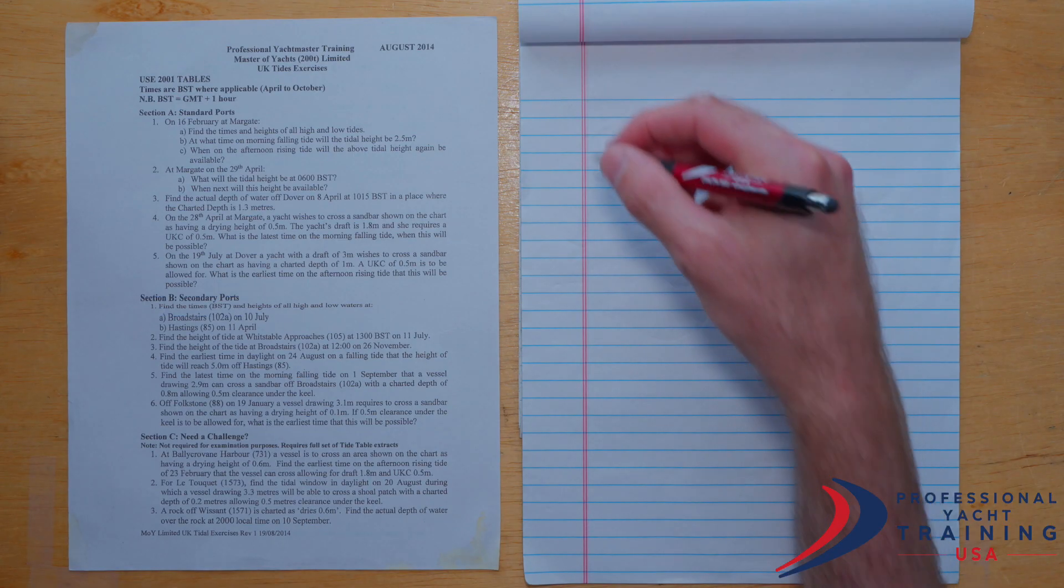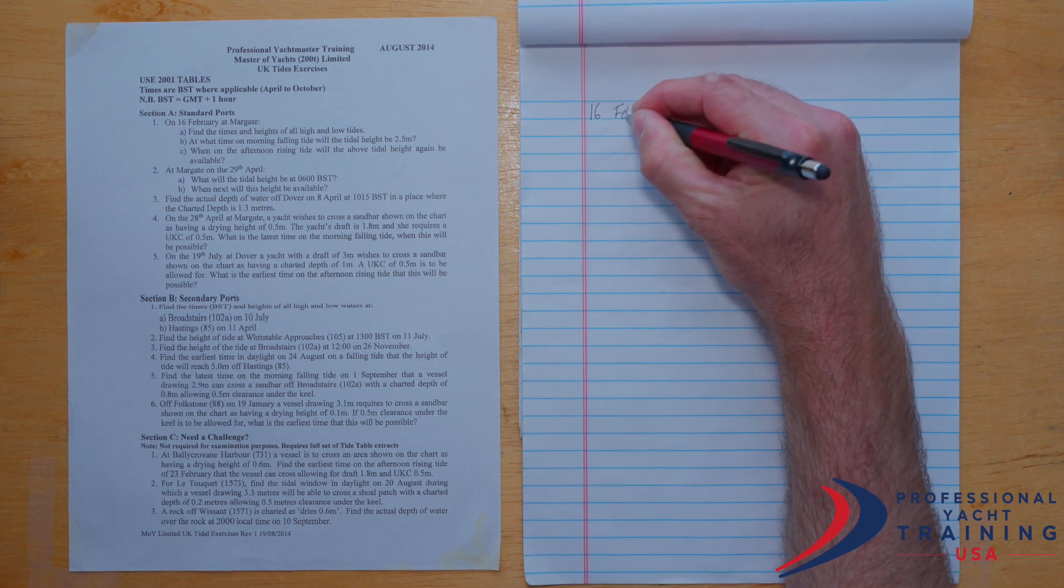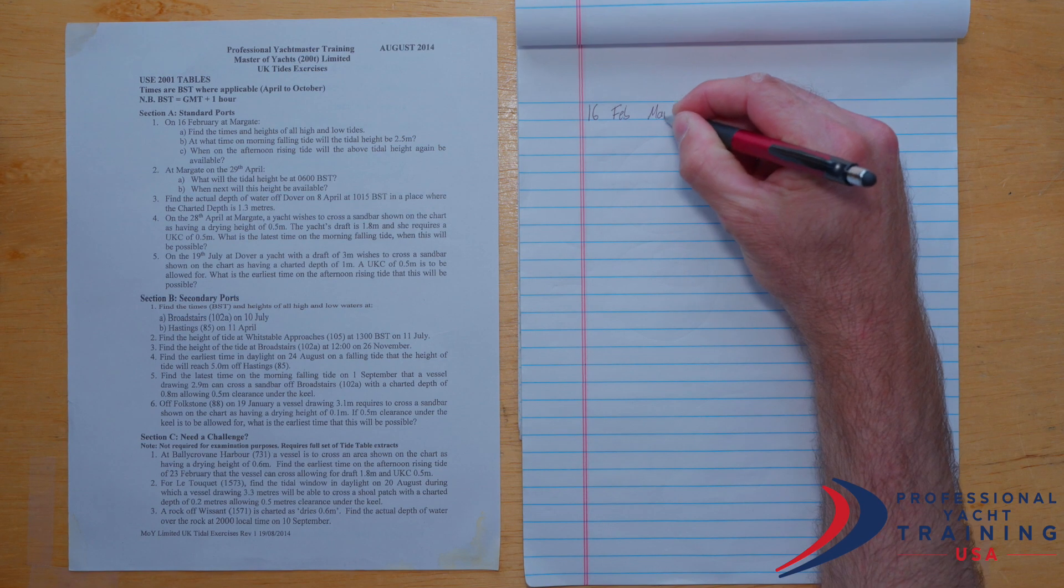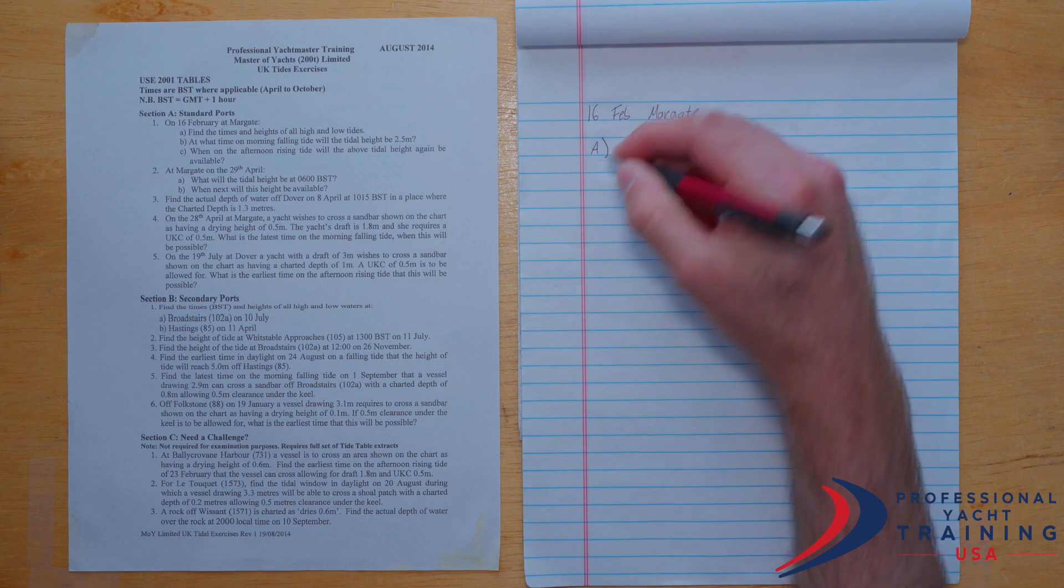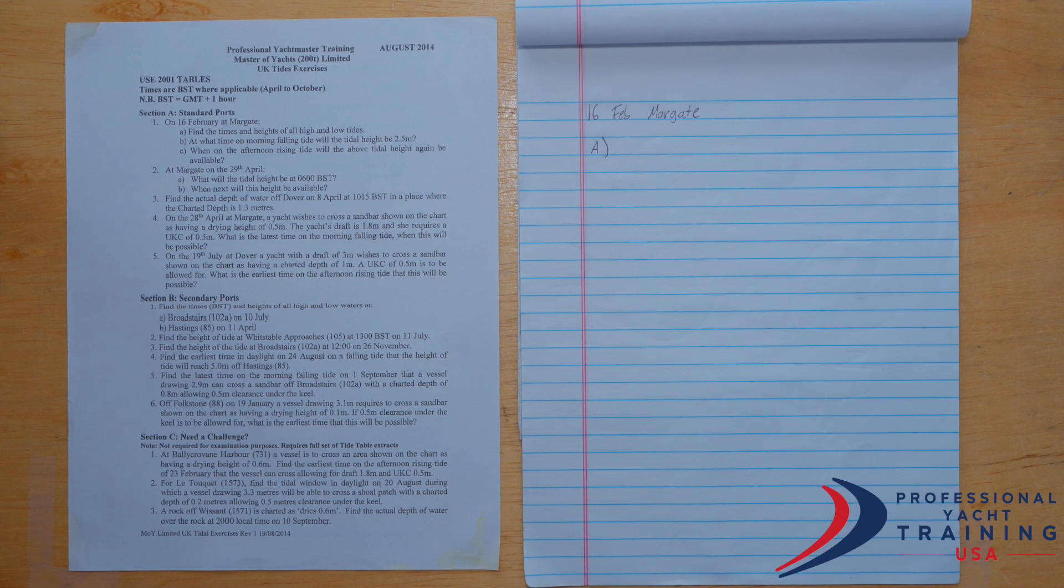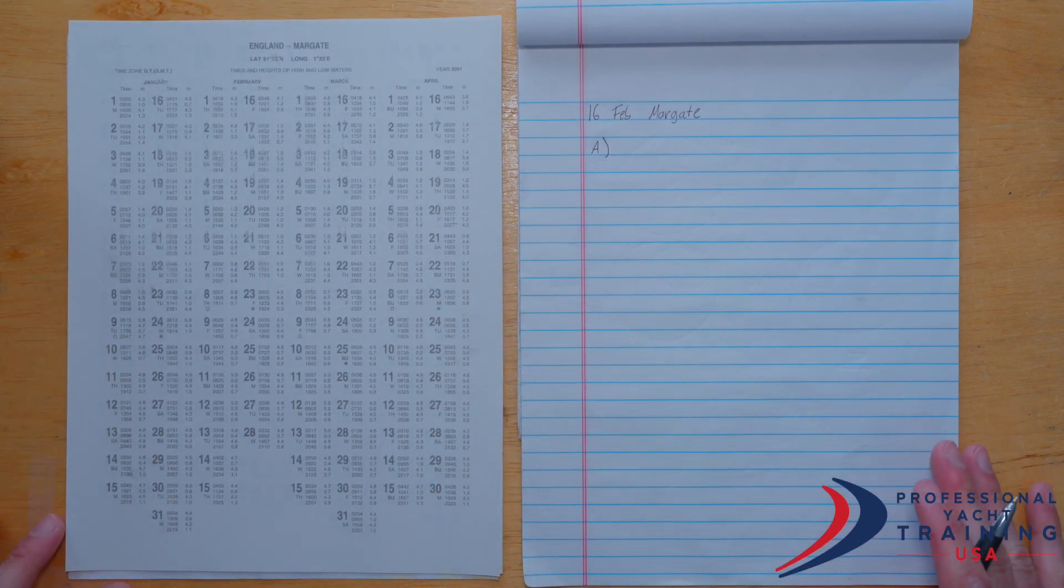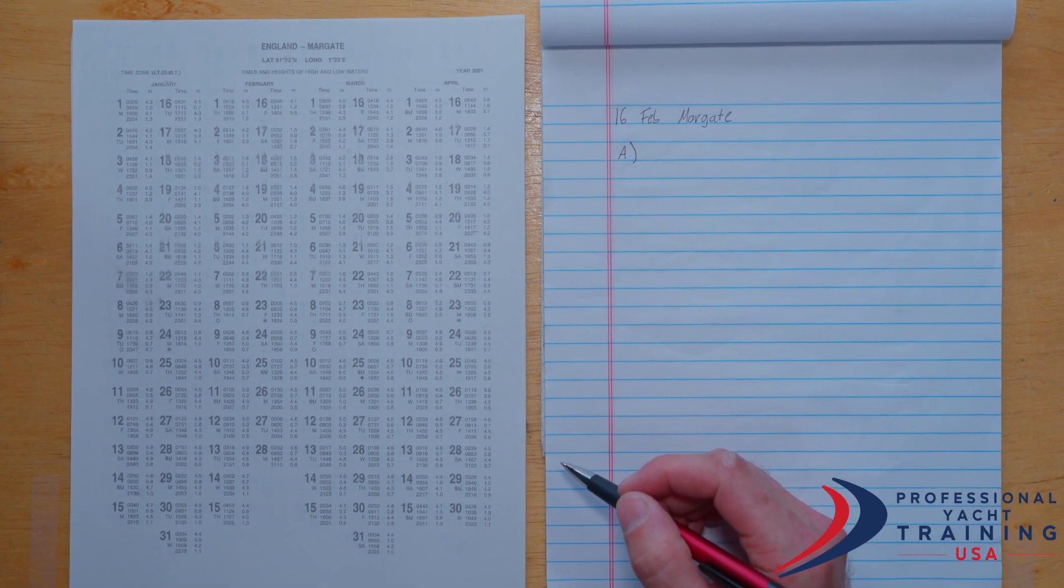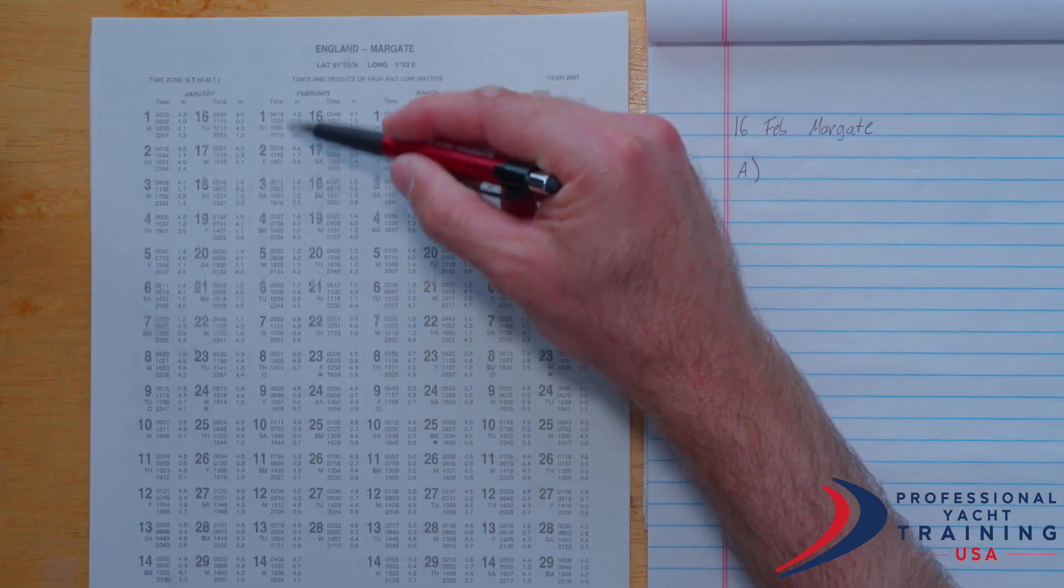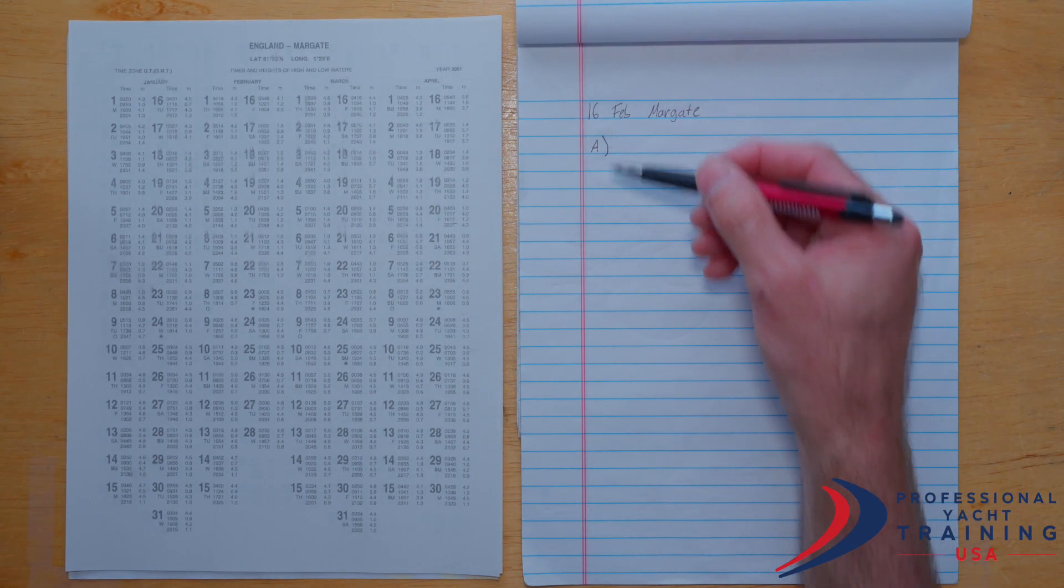This will take a little bit of work, so I'm going to try to keep my notes neat. We're going to be looking for the 16th of February and we're looking for Margate. For section A, they're asking us to find all the times and all the heights of tide. All we've got to do is find Margate within our tide tables. We're working on the 16th of February and so you'll find that data here.